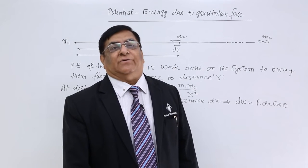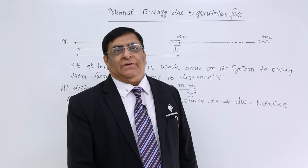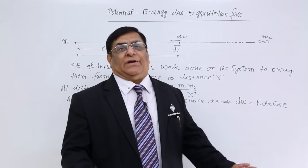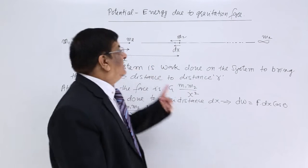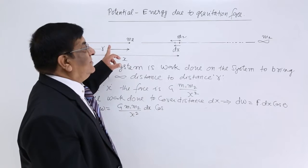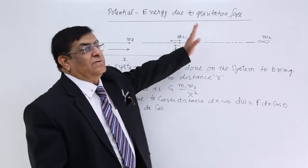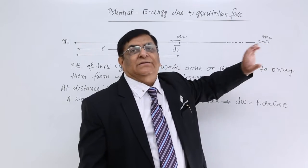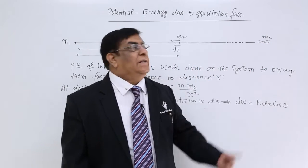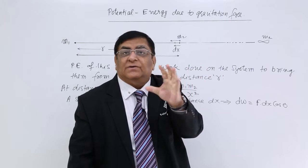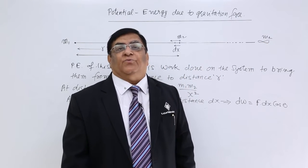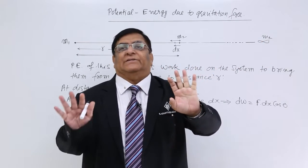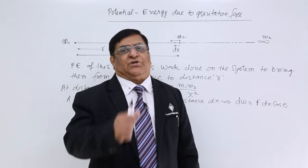Now, how can we calculate how much work is done? For that, first we search for a point of zero energy. We know that the field of M1 is extended to a very large distance, and when we reach infinity, this field is almost zero. There, if we place M2 and move it, no work has to be done. So we can say that when M2 is at infinity, the potential energy is zero. That is our starting point.